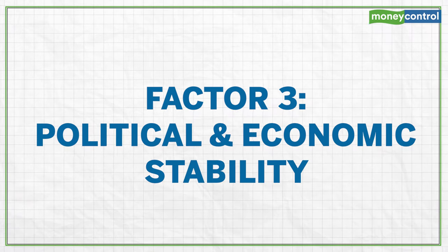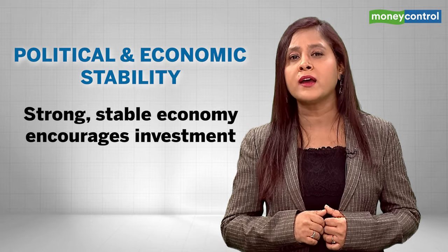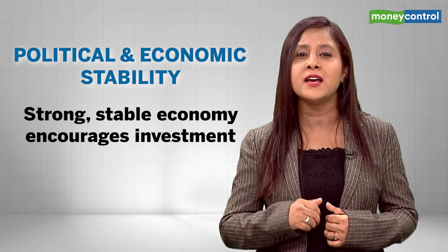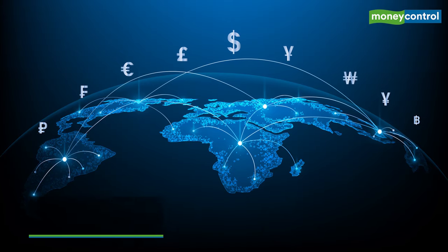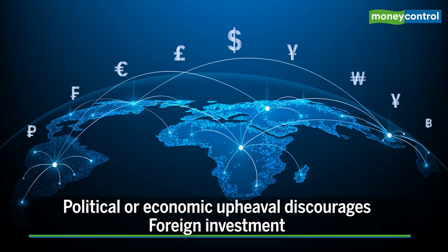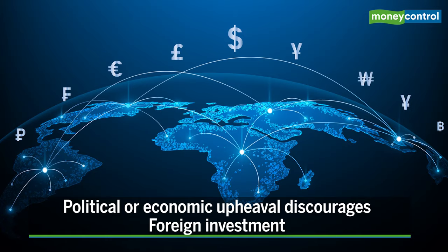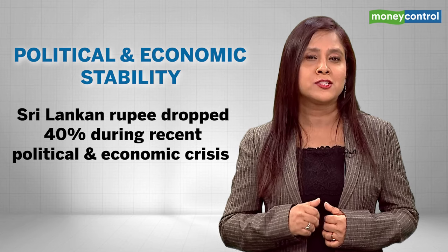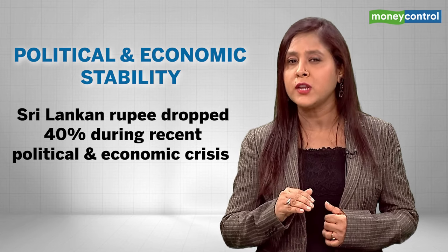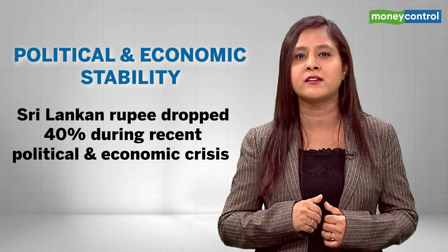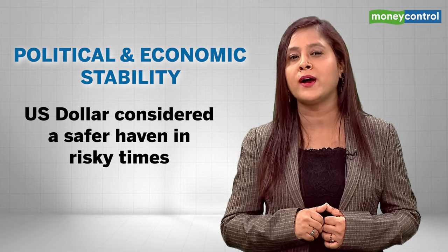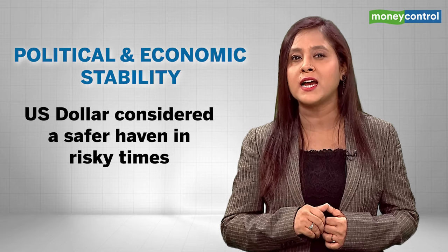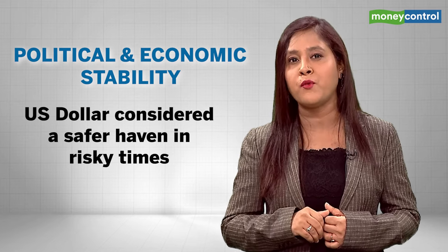Factor number three: political and economic stability. Just like us, the market craves stability. A strong, stable economy encourages investment, increasing the demand for the country's currency. When countries go through political or economic upheavals, it discourages foreign investment, reducing the currency's value. A case in point is the Sri Lankan rupee, which was down by a whopping 40% during the recent turmoil in the country. This is also why the dollar is so strong right now — it's considered a safe haven during risky times with the pandemic, the Ukraine war, and the likes.